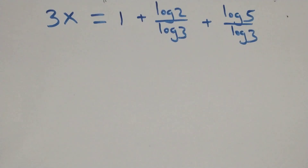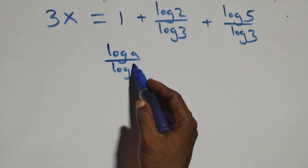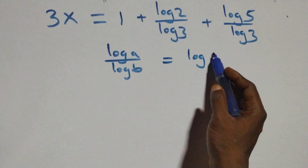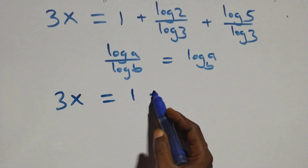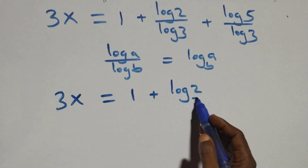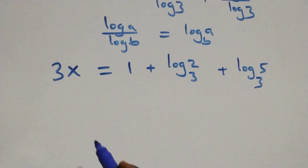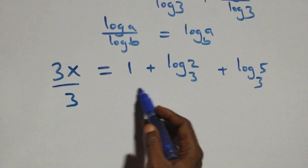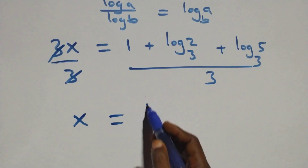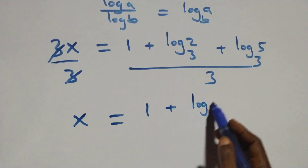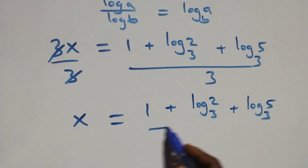Here we apply the change of base formula: log A over log B is the same as log A to base B. So this becomes 3x equals 1 plus log₃2 plus log₃5. Then we divide both sides by 3, and 3 cancels, giving x equals (1 plus log₃2 plus log₃5) all over 3.